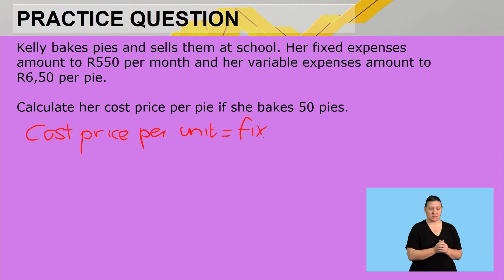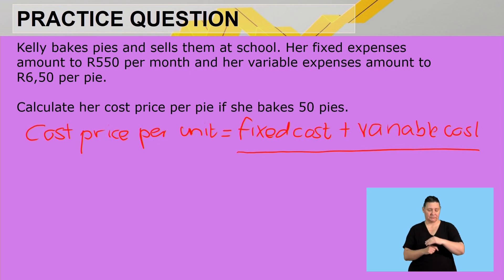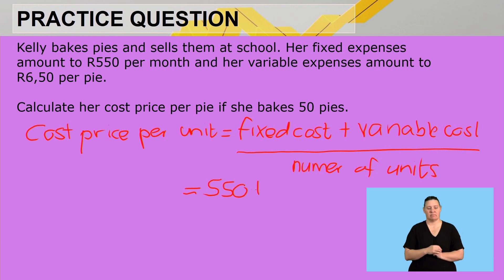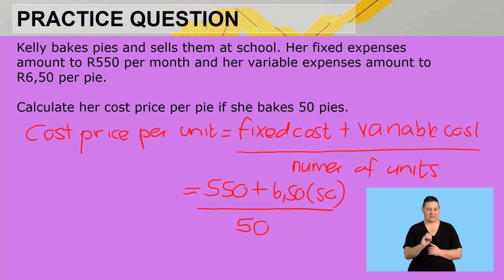Calculate her cost and then divide it by the number of units. It's going to be R550 plus R650 times the number of pies that she will be making, divided by the number of pies.